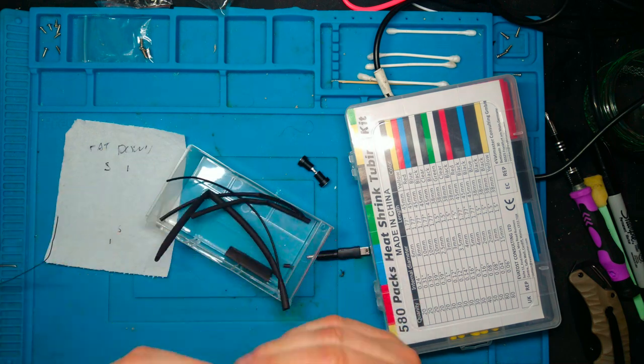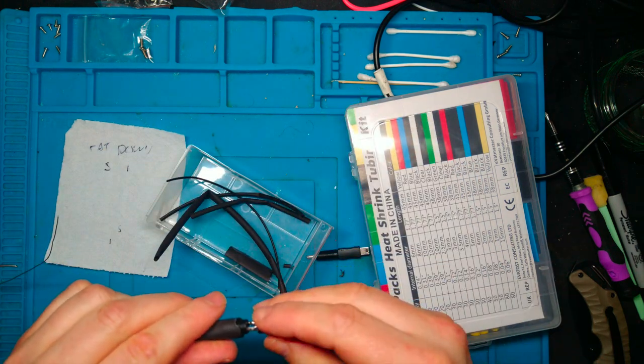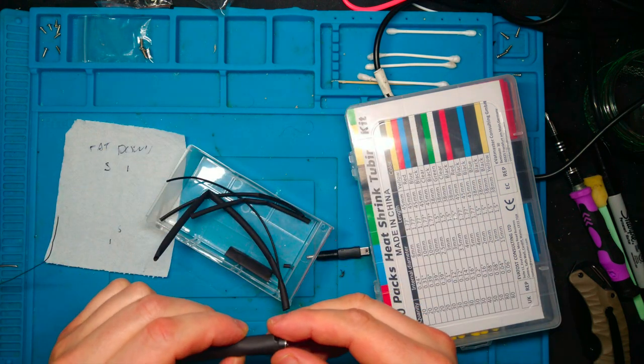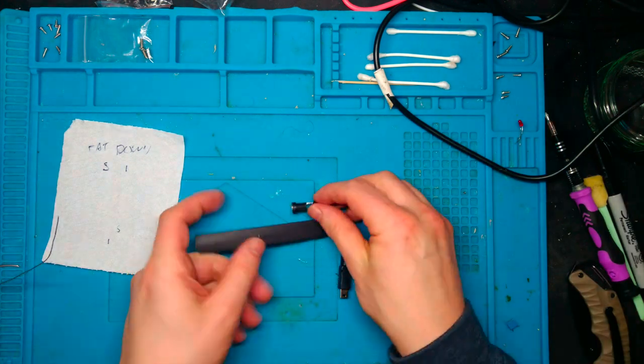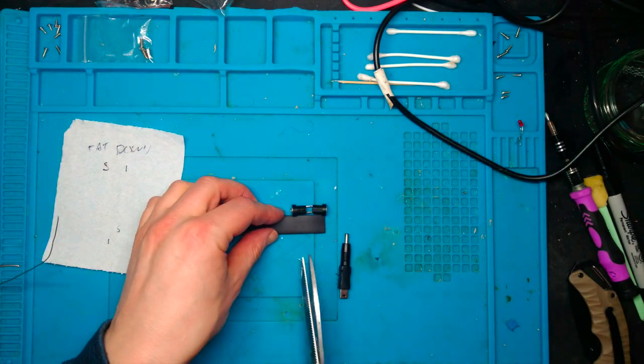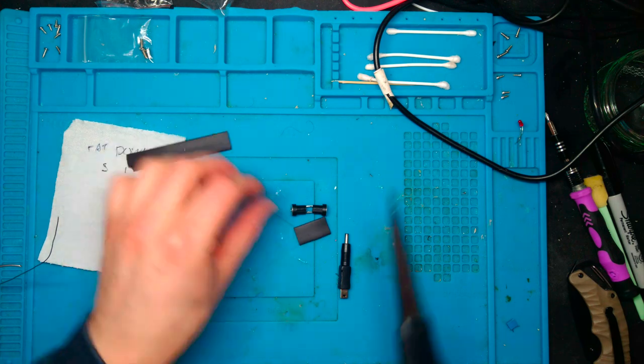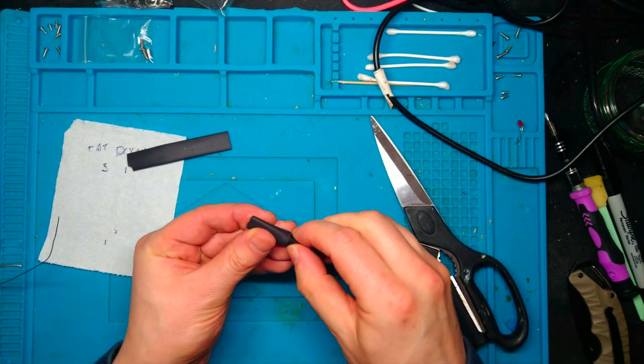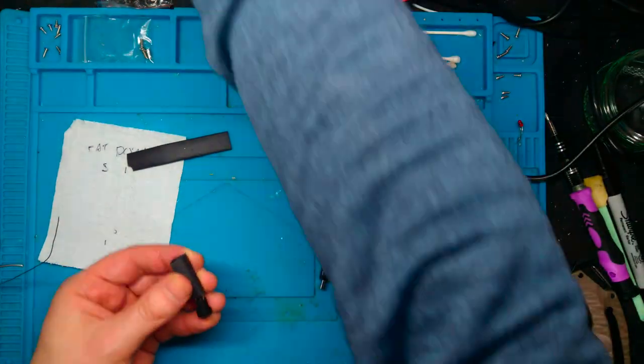I had some heat shrink that was quite big, quite big thick heat shrink that seemed to be about the right size. So I thought right I'll cut a section of that. Get my scissors out. You've got to cut it slightly longer than you think because what does heat shrink do? It shrinks. And I wanted to make sure it was going around the whole assembly.